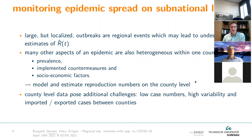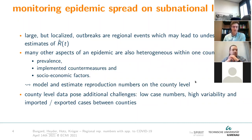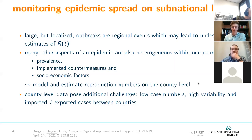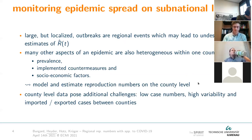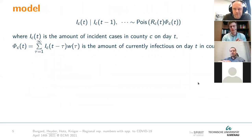However, going to the county level introduces another set of problems: the data are of course sparser. Germany has 401 counties, so for every single county there is much less data, especially in scenarios like last summer with overall low incidences. The data are much more variable, and you have effects where cases are exchanged between counties — if you go shopping in the big city, get infected there, and come back home, you're reported as a case in your hometown even though you got infected somewhere else. These are effects we have to consider.